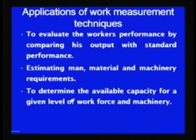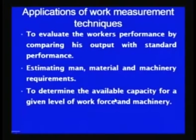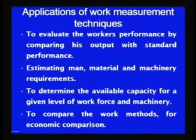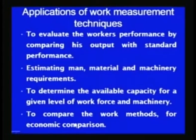If an organization knows the work force and systems available and the units that can be produced at a given rate, this information can be used to find out the capacity of the organization for producing a given product. The available capacity for a given work force and machinery can be calculated from the standard of performance. If there are various possible alternative ways for carrying out one job, their effectiveness in terms of economics can be compared using work measurement technique in terms of the work content and time required for each method.